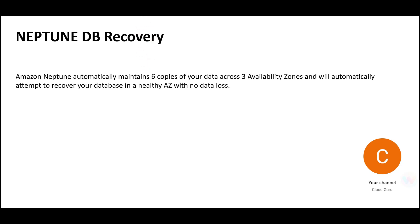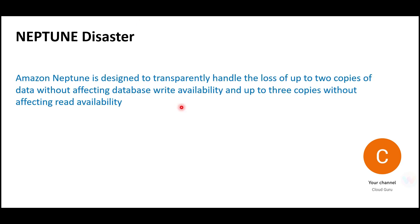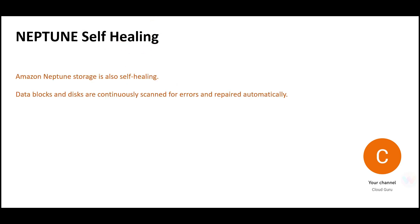If a disaster strikes, Neptune always maintains six copies of your data across three availability zones. It will automatically attempt to recover your database in a healthy AZ with no data loss. It can transparently handle loss of up to two or three copies of data without affecting write availability. Neptune also has self-healing systems — the storage is self-healing. Data blocks and disks are continuously scanned for errors and repaired automatically. You may be asked about this self-healing feature in the certification.